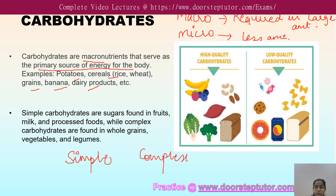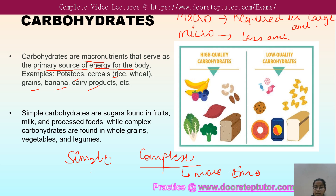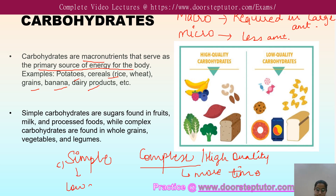Carbohydrates are of two types: simple carbohydrates and complex carbohydrates. Simple carbohydrates can easily be broken down, while complex carbohydrates take more time to be broken down in our body. Complex carbohydrates are known as high-quality carbohydrates, and simple ones are known as low-quality carbohydrates.